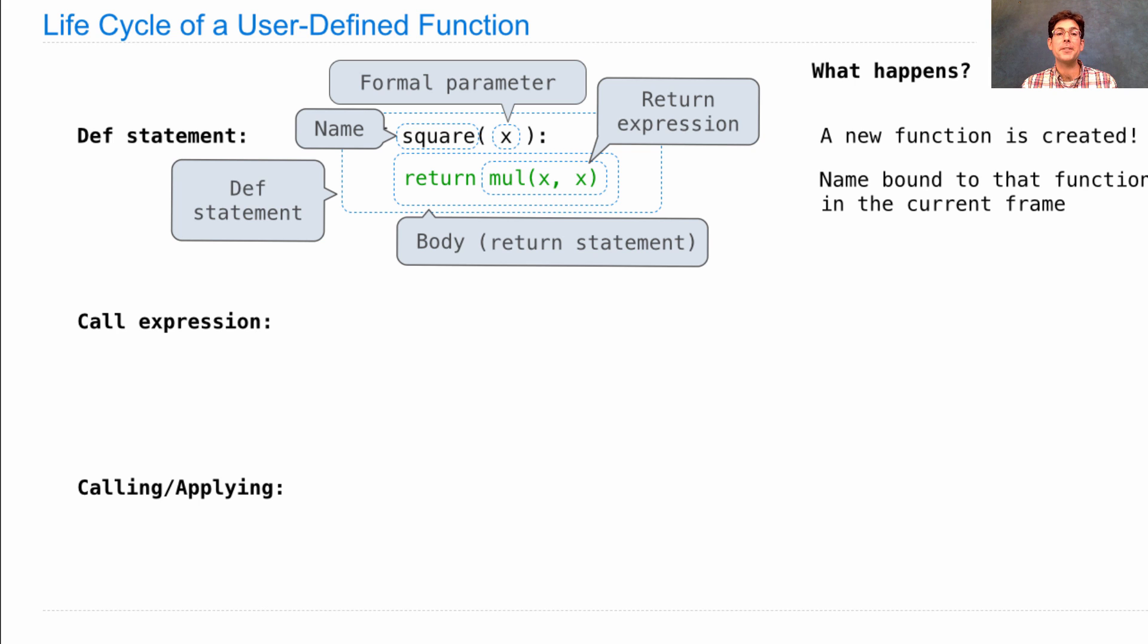Nothing gets multiplied until there's a call expression that calls that function. So a call expression looks like this. We saw that on the first day. Here we have an operator, in this case the name square, and the operator evaluates to a function, the function that squares things. That's the one that we just defined. In environment diagrams, we're going to write functions by writing func, and then the signature, which includes the name and the formal parameters.